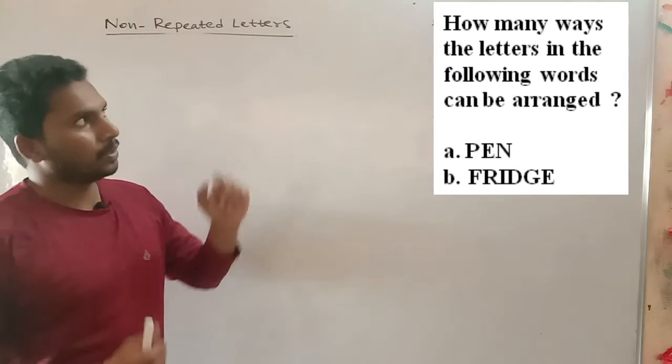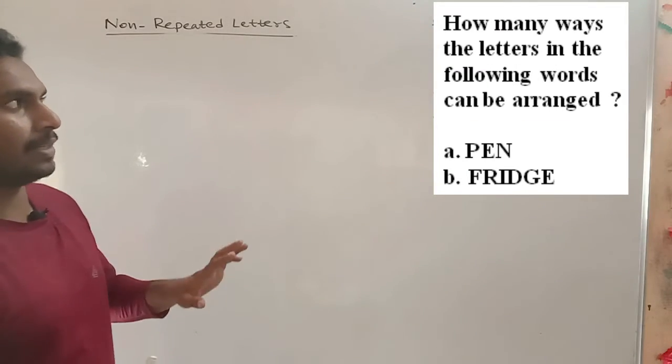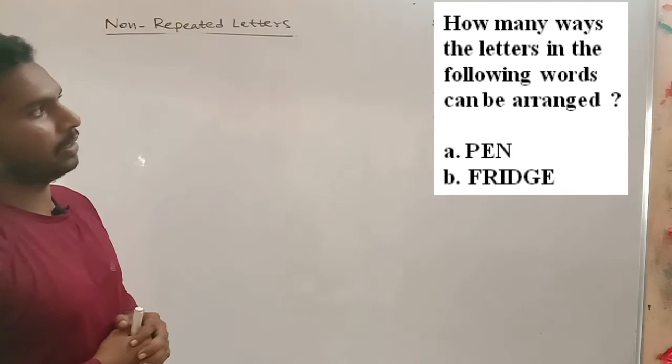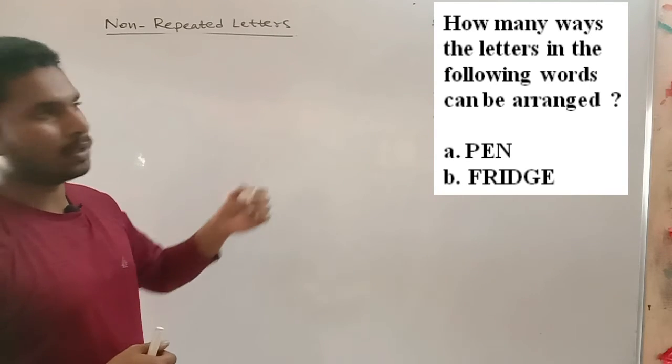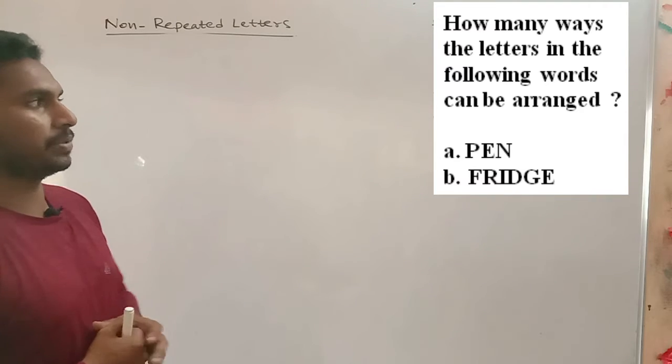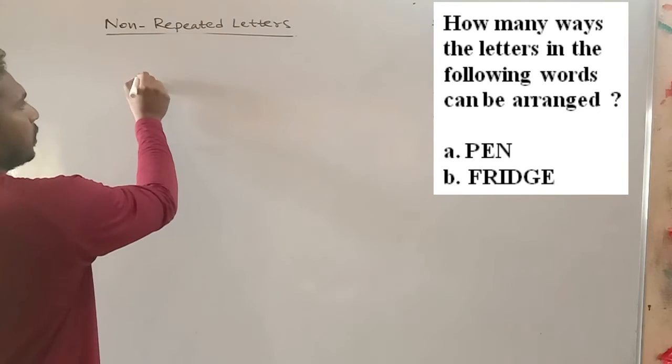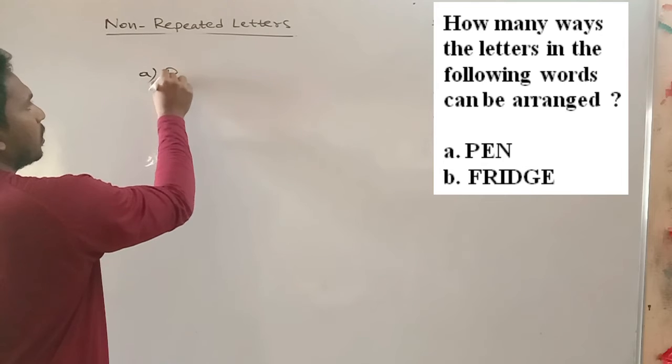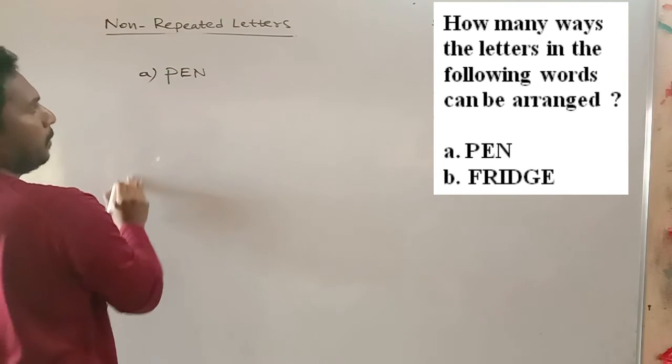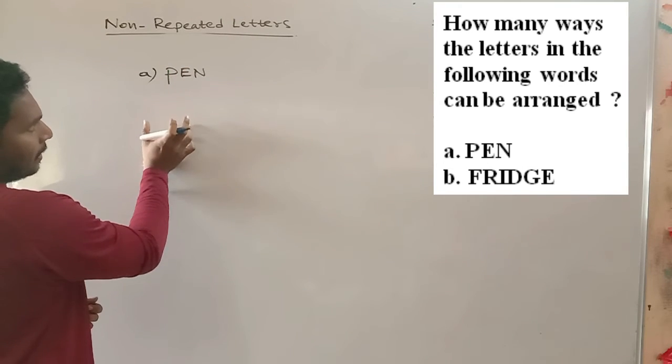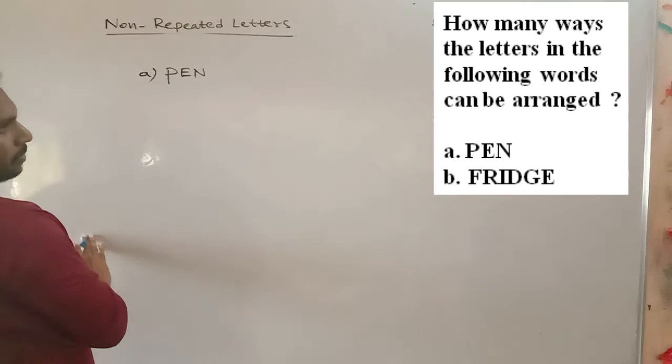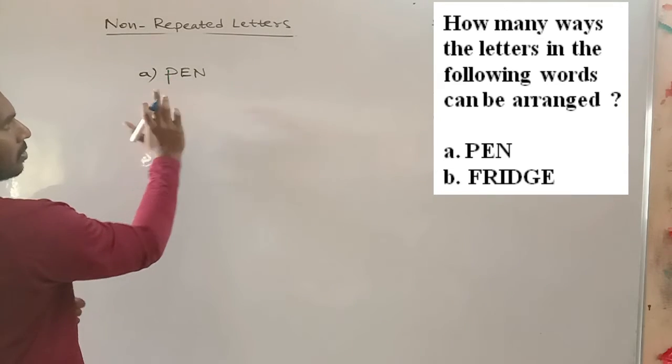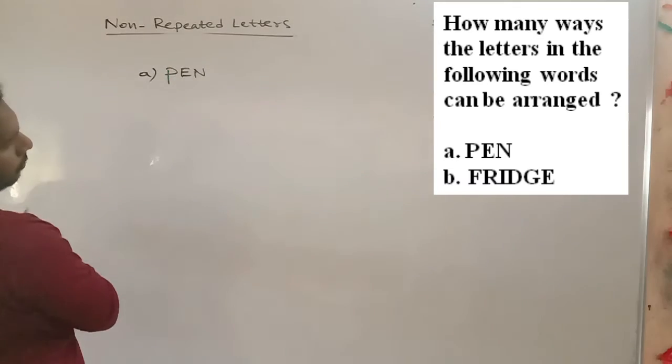Now question number 2: How many ways the letters in the following words can be arranged? They have given two words: pen and fridge. So let us do it with the first word that is given, that is pen. How many ways the letters in the word pen can be arranged? You have to do some jumbling and you have to form a new word. How many such words are possible?